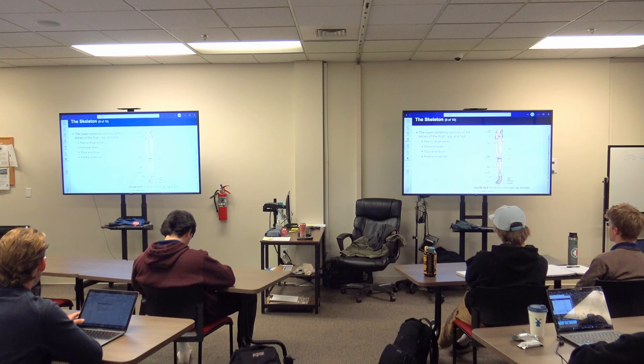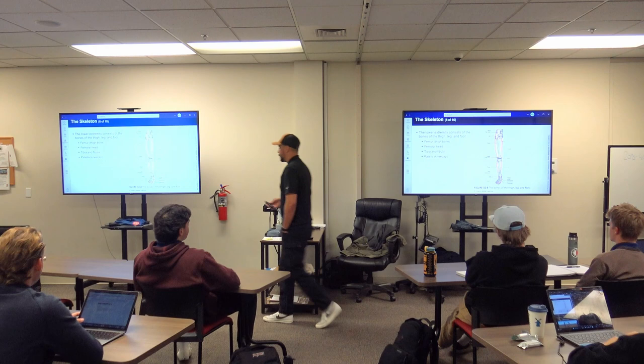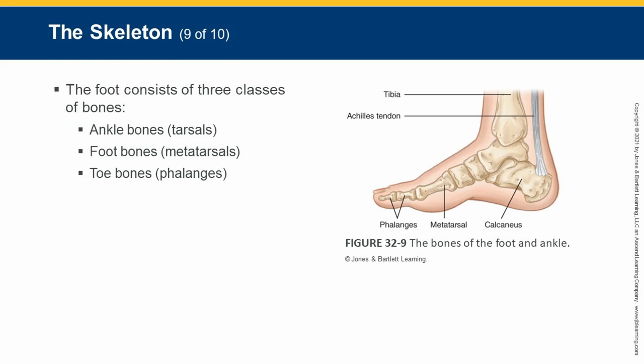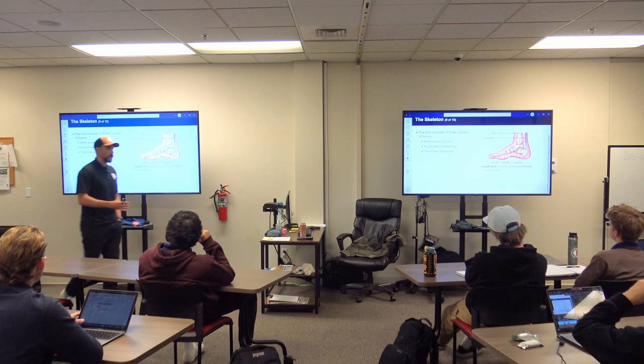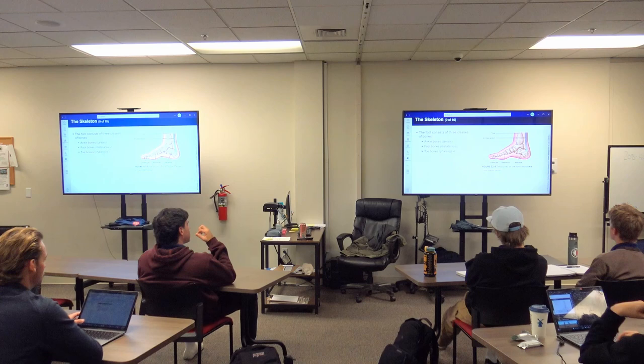The patella, or kneecap, floats and is held in place by patellar ligaments and tendons. The foot is similar to the hand: instead of carpals it's tarsals for the ankle bones, metatarsals for the foot bones, and phalanges for the toes. To summarize: carpals/metacarpals/phalanges for the hand; tarsals/metatarsals/phalanges for the foot.